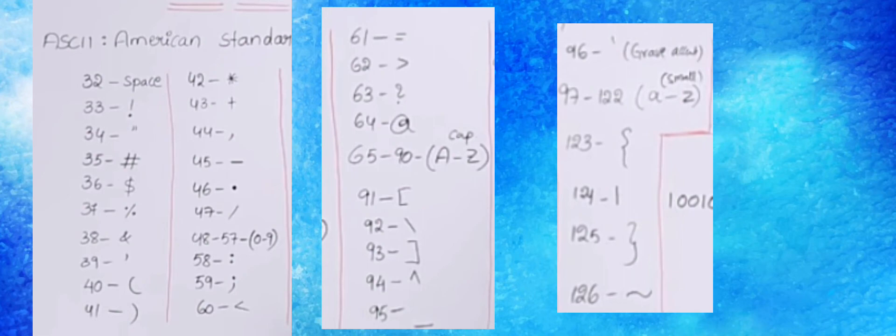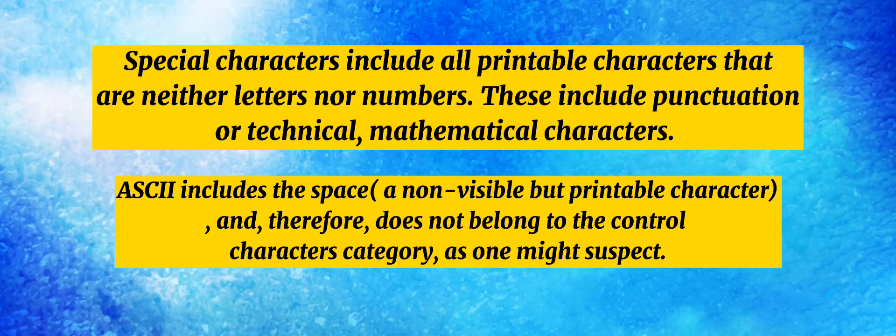48 to 57 has characters 0 to 9. Special characters range from 32 to 47, 58 to 64, 91 to 96, and 123 to 126. Special characters include all printable characters that are neither letters nor numbers, including punctuation or technical mathematical characters. ASCII also includes the space, a non-visible but printable character, and therefore does not belong to the control characters category as one might suspect.